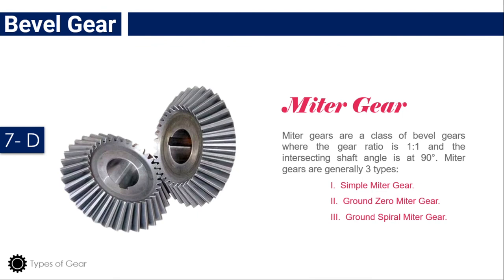Miter gear: Miter gears are a class of bevel gears where the gear ratio is one to one and the intersecting shaft angle is at 90 degrees. Miter gears are generally of three types: simple miter gear, ground zero miter gear, and ground spiral miter gear.